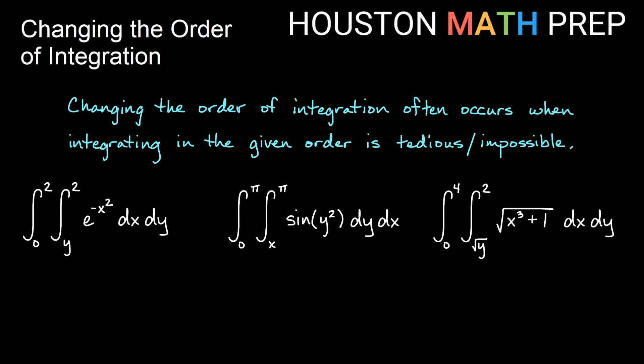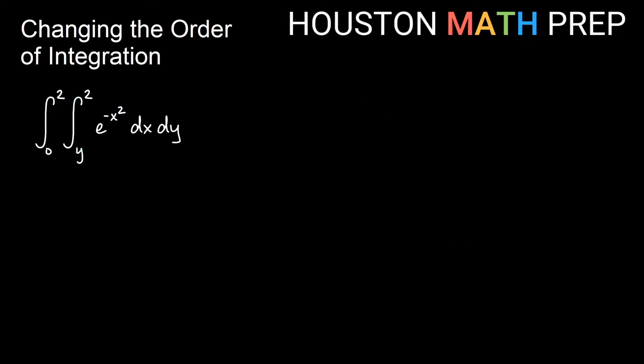We'll talk through how to change the order of integration, looking at your region in the plane, and assigning your new order and the new bounds to go with your new order. Let's look at our first one here. We have an exponential. We can't really integrate e to the negative x squared first with respect to x — there's not really a way to do that with basic elementary functions that we know. So we're going to go ahead and change our integral to a double integral, but we're going to integrate dy dx.